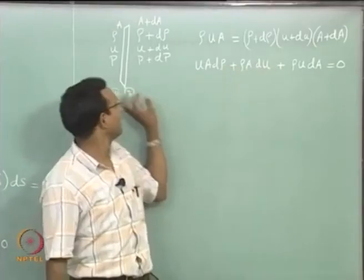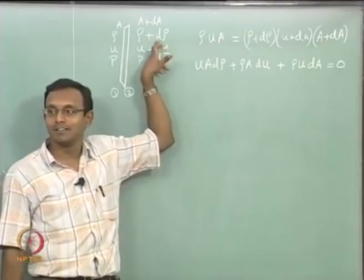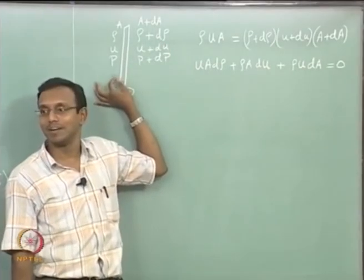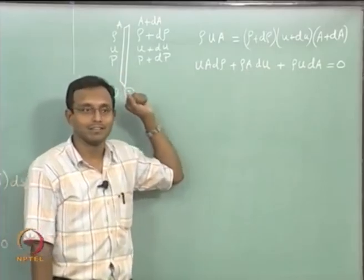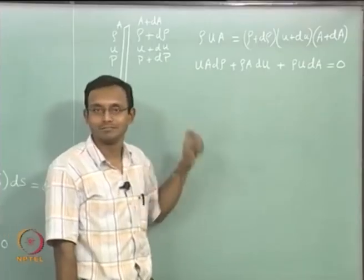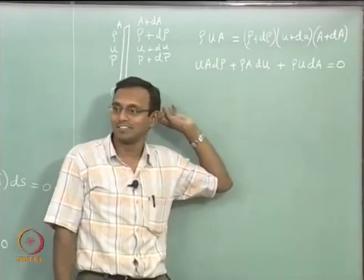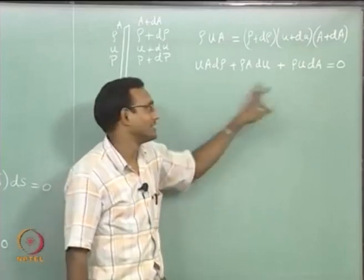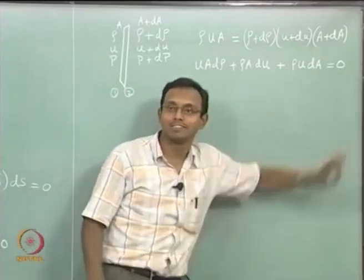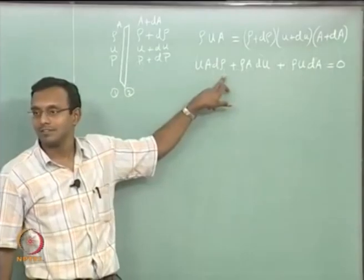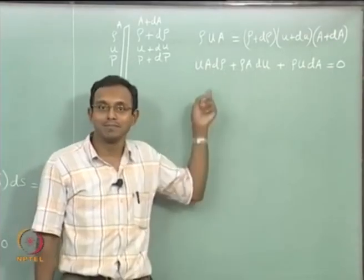This is justified when the control volume is a very very thin slice, because then dρ becomes (dρ/dx)·δx and in the limit of calculus that is valid. Mathematicians are fine with it, so we can say it is equal to 0. This can be further simplified if I divide the whole expression by ρUA — but always keep in mind what you are dividing by when you do that.